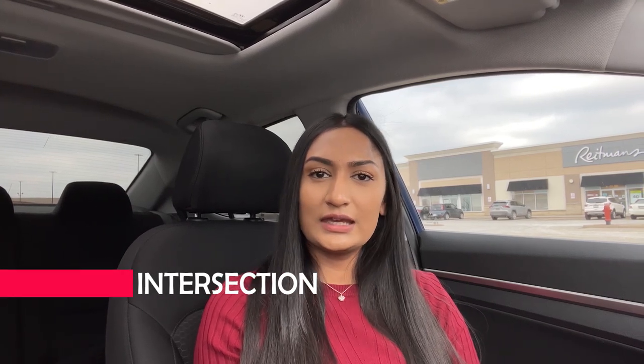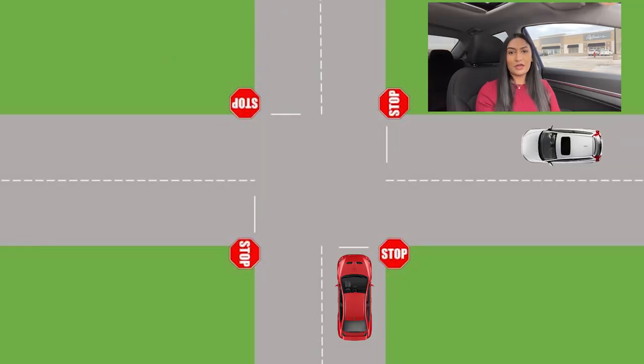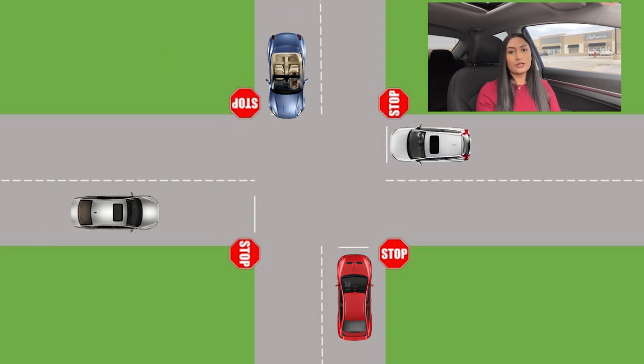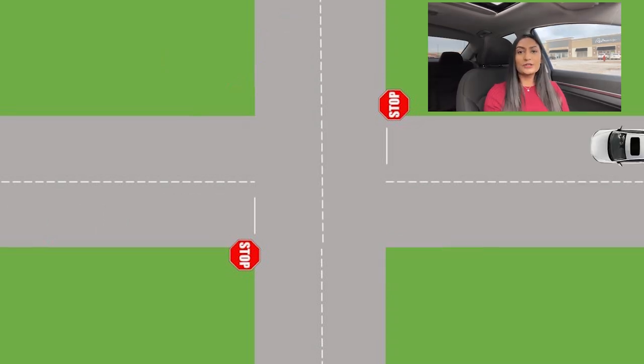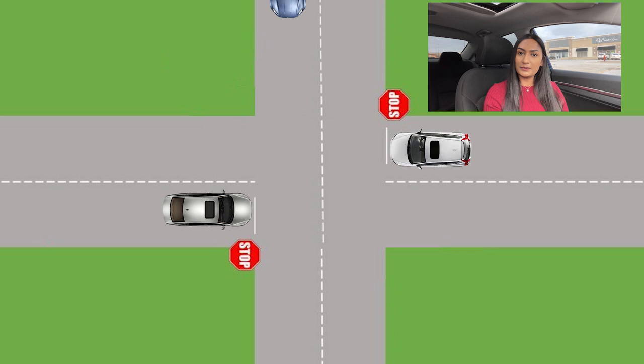Now let's begin with today's topic — intersections. Intersections are mainly controlled by traffic signals and stop signs. Stop signs are of two types: always stop sign and directional stop sign. An always stop sign means traffic from every direction has to stop at the intersection. A directional stop sign is placed to control a specific direction. If there is a stop sign on your route, it is mandatory that you come to a complete stop.